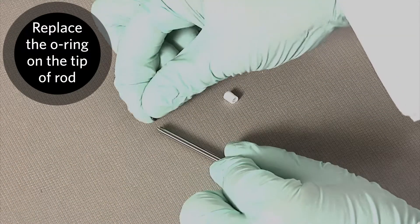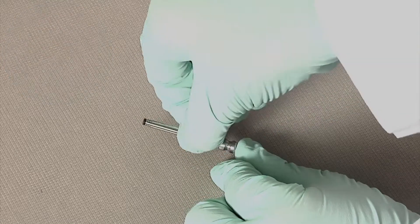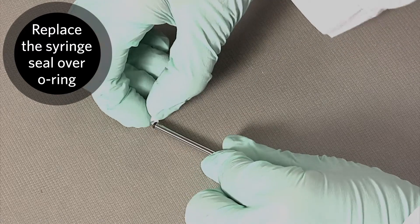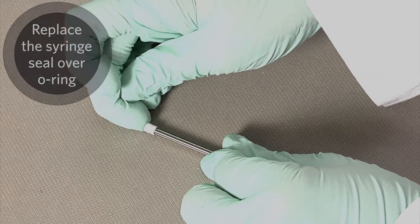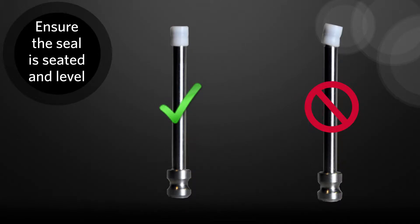Replace the O-ring on the tip of the plunger rod. Then, replace the syringe seal over the O-ring. Ensure the seal is fully seated and the top is level.